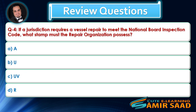Question 4: If a jurisdiction requires a vessel repair to meet the National Board Inspection Code, what stamp must the repair organization possess? Answer is D.